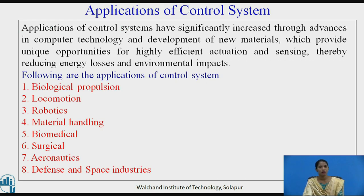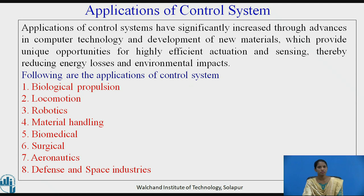The conditions of control systems have significantly improved through advances in computer technology and development of new materials, which provide unique opportunities for highly efficient actuation and sensing, thereby reducing energy losses and environmental problems. Applications of control systems include biological propulsion, locomotion, robotics, material handling, biomedical, surgical, aeronautics, and defense and space industries.